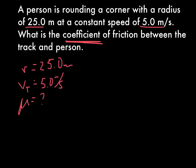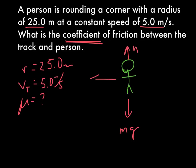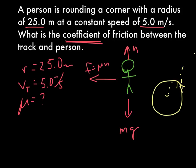First thing we're going to do is draw a little force diagram. Here's your person. They have their weight, mg, pulling down, normal force pulling up, and then friction is pushing towards the center. Because if you're going in a circle, you need something to accelerate you towards the center of the circle. If not, you just fly off into the abyss.